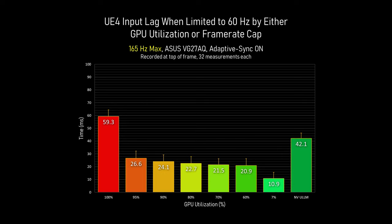I promised earlier I would get to ULLM and why you might want to use it. Turning off the frame rate cap and setting the render resolution back up to 230%, NVIDIA's ultra low latency mode does drop the input lag by more than a full 60Hz frame. I'm not quite sure it deserves the 'ultra' moniker, but it does work. And unless there's some specific problem using it with the game you're playing, you may just want to set it globally to on.